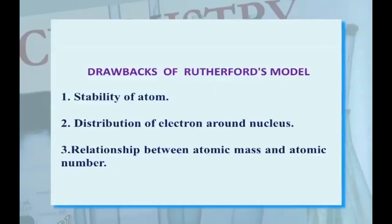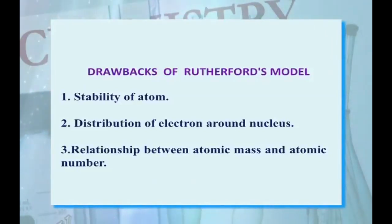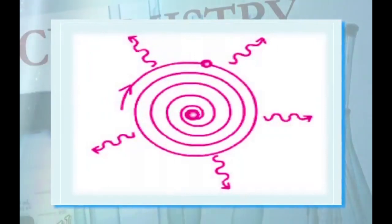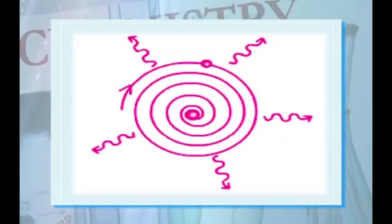After the Rutherford atomic model, there were also some drawbacks. The drawbacks of Rutherford's model were: first, the stability of the atom — Rutherford's model does not explain the stability of the atom, that is, the actual position of electrons and protons; second, the distribution of electrons around the nucleus was not specified; third, the relationship between atomic mass and atomic number was also not explained. This picture depicts that when an electron starts revolving around the nucleus, it will radiate energy and ultimately collide with the nucleus, showing the instability of Rutherford's atomic model.